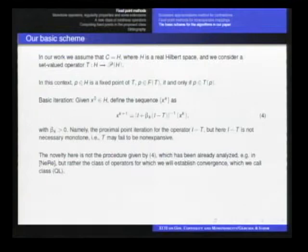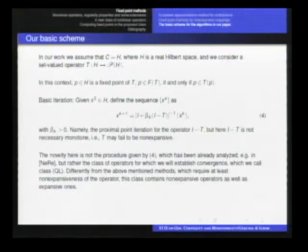So look, if T is non-expansive, the identity minus T is monotone mapping. And here we have a strongly monotone mapping. So we have a regularization of the operator identity minus T. And the method can also be seen as some kind of projection method, like the previous one, using some separation hyperplanes.